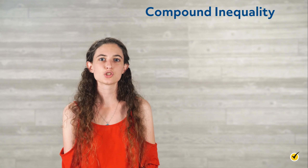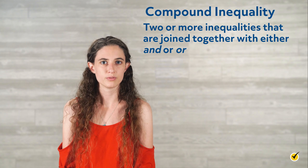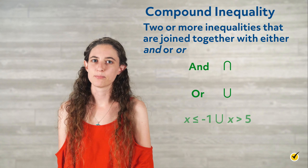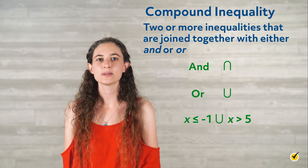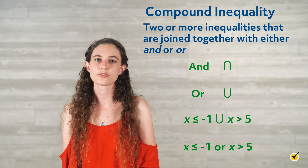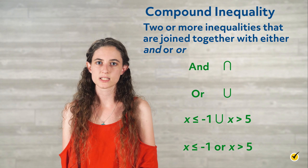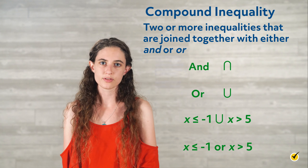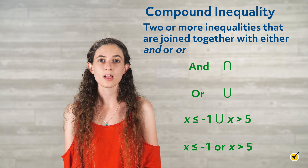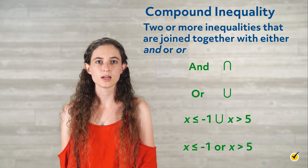A compound inequality is two or more inequalities that are joined together with either AND or OR. They are sometimes written with a symbol for AND and a symbol for OR. For example, this is a compound inequality that means the same thing as x is less than or equal to negative 1 or x is greater than 5. The possible solutions are all numbers that are either less than or equal to negative 1 or greater than 5. When graphing compound inequalities on the number line, the same rules apply as with simple inequalities, and both inequality statements are graphed on the same number line.